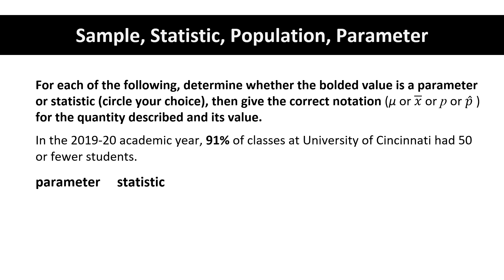The 91% is describing either a sample or a population. In this case, we are describing all the classes at UC, so this is a parameter.